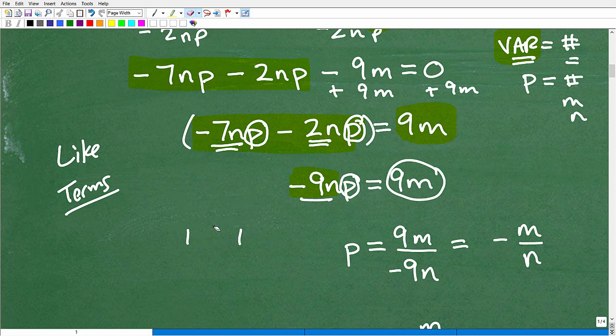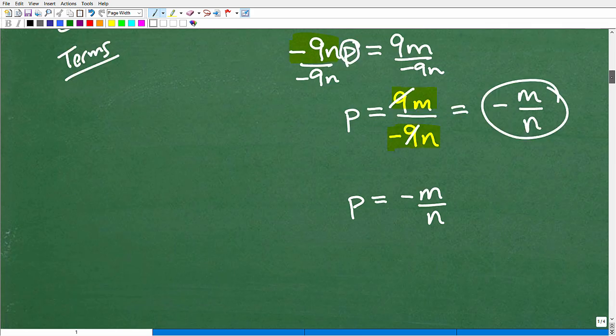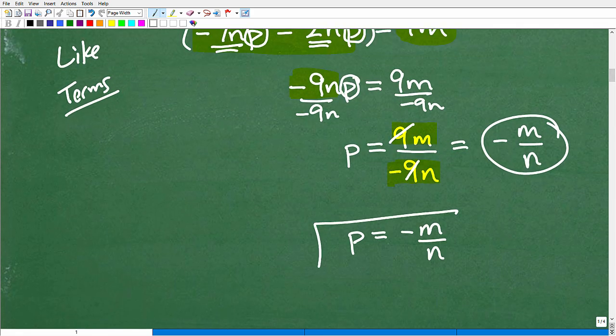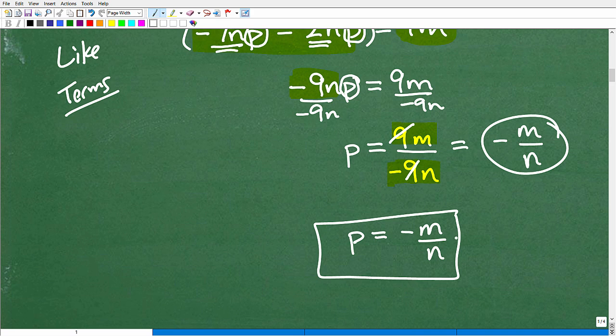But so that is negative 9n. I need to divide both sides of the equation by negative 9n. So I'm showing you that step here, but I actually wrote it out right here. So P is equal to 9m divided by negative 9n, and I can simplify by the 9s cross cancel. So I end up with a negative m over n. So P is equal to negative m divided by n, and that is the answer.